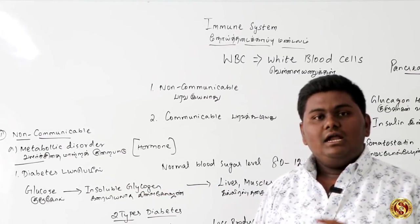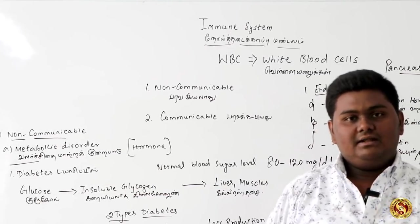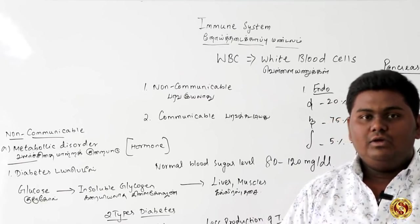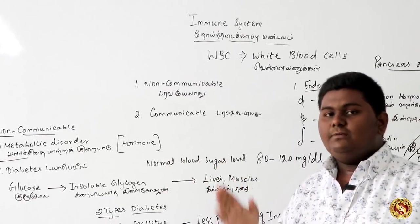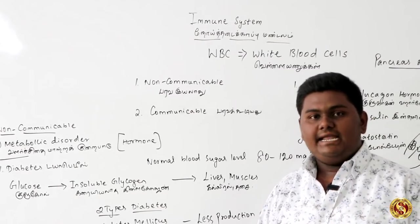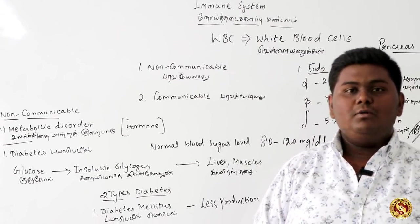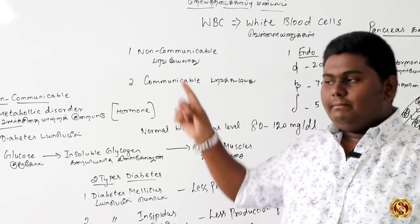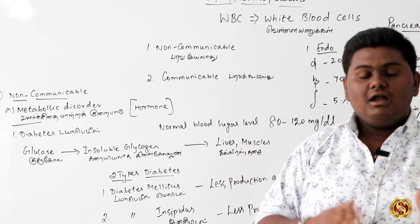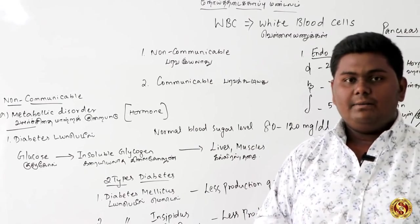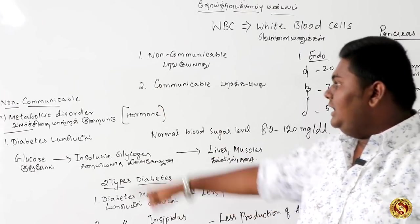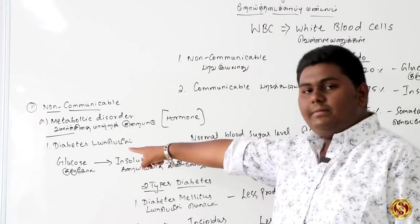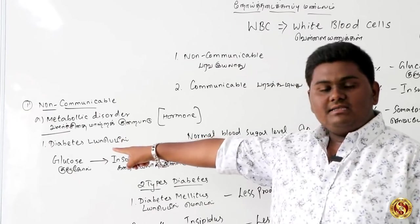Diabetes is not transmitted to others. The lymph is not only one type. Looking at communicable versus non-communicable diseases: non-communicable diseases like metabolic disorders involve hormones. Metabolic disorder A is a hormone disorder — that is diabetes.